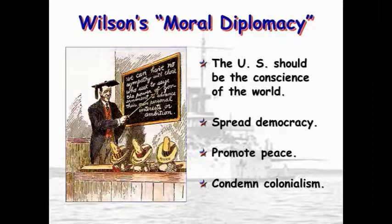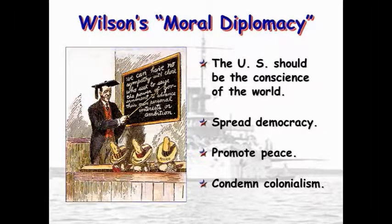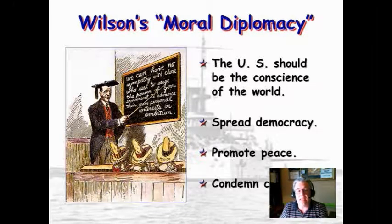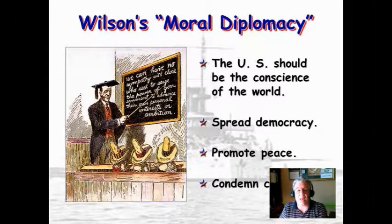Woodrow Wilson was elected in 1912 on a Democratic ticket, and he believed in what was known as moral diplomacy: the U.S. should be the conscience of the world, spread democracy, promote peace, and condemn colonialism. Though we were already involved in colonialism right after the Spanish-American War. One thing I want you to realize — and I'm going to say this on screen — is that Woodrow Wilson was a racist, and when we start talking about World War I, I'll explain why he was considered that.